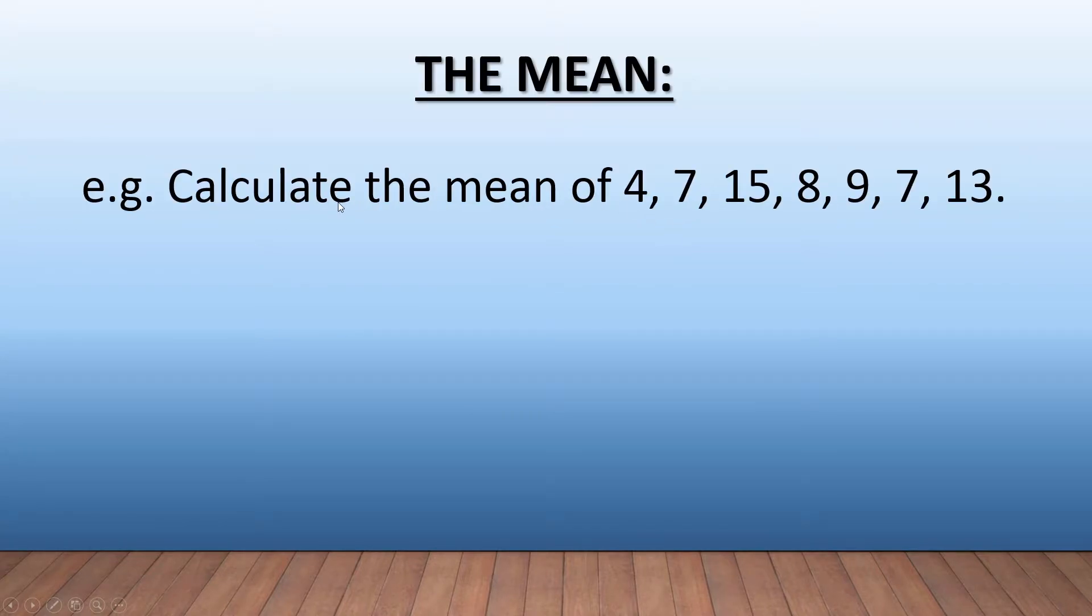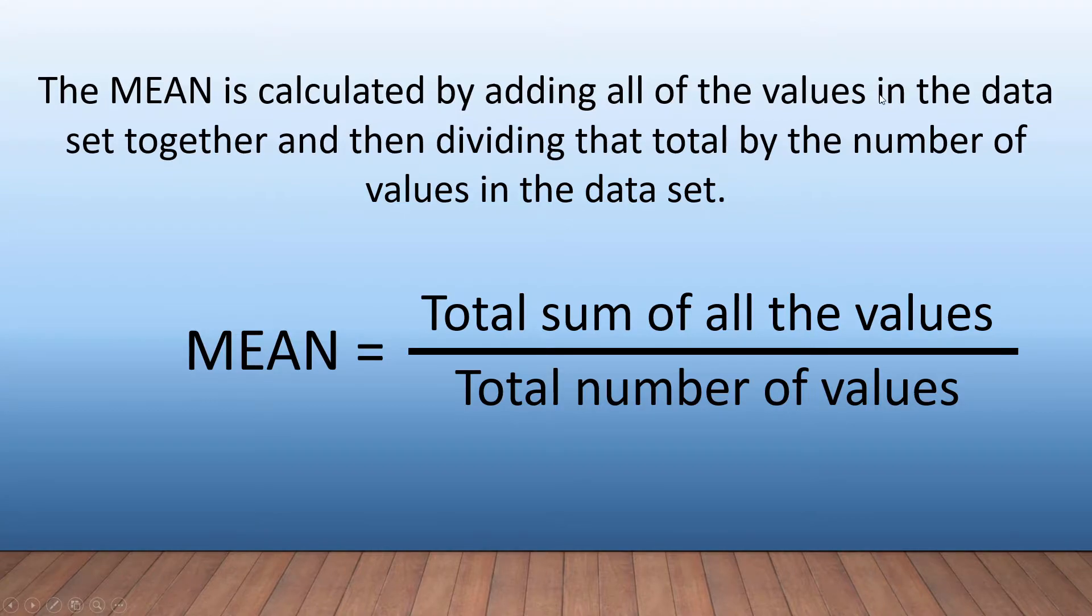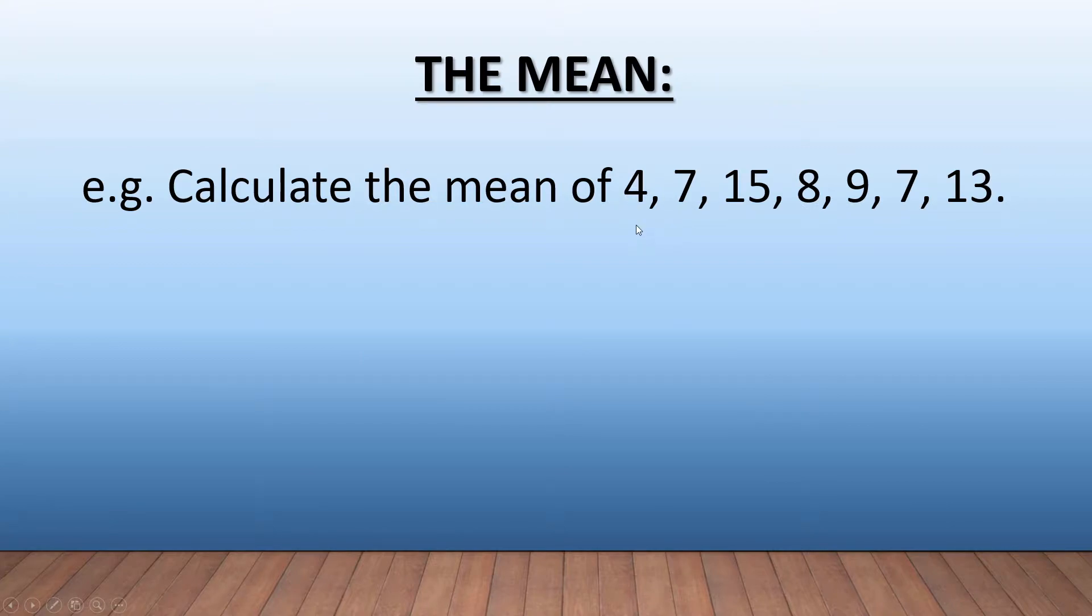Say they ask you to calculate the mean of these numbers. Now remember what we said: we're going to add up all the values in the data set and divide by the total number of values. Now how many values are there? One, two, three, four, five, six, seven. So we already know that, and then we need to add it all together.